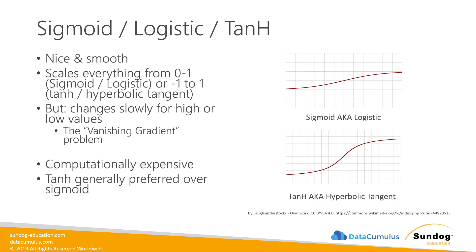These functions have some problems, though. As you get toward the extreme positive or negative values of the inputs, the output starts to change very slowly — this is what we call the vanishing gradient problem. It can get to the point where numerical precision issues become a problem. We'll talk about the vanishing gradient problem in more detail later, but this is where it comes from. They're also computationally expensive — computers aren't very good at doing trigonometry quickly, so using these functions tends to make neural networks take longer to converge.